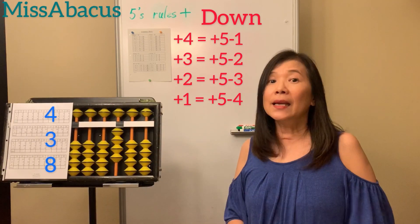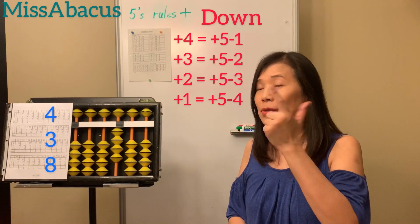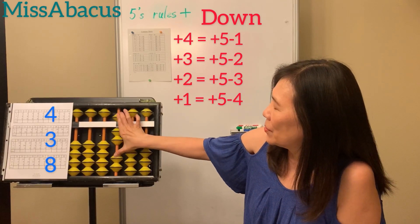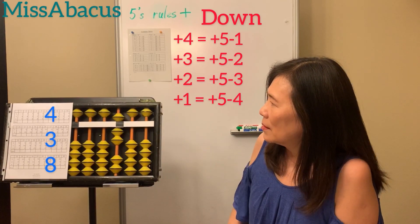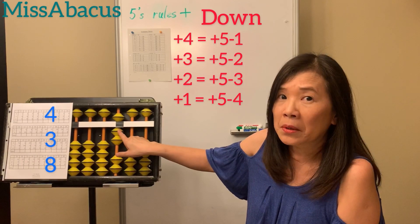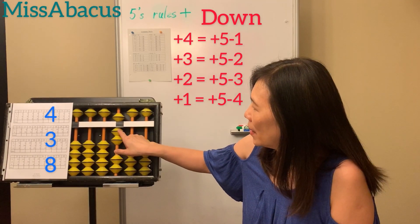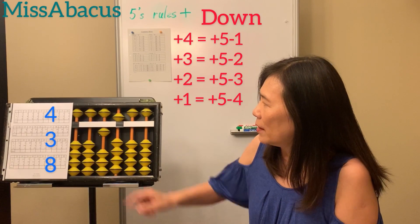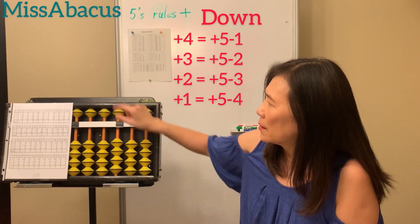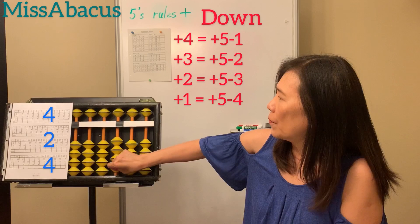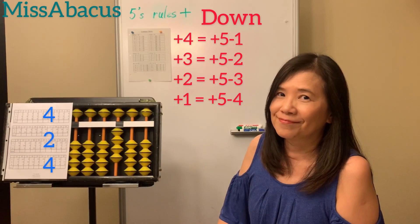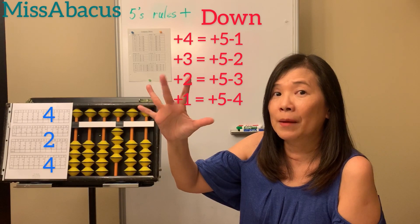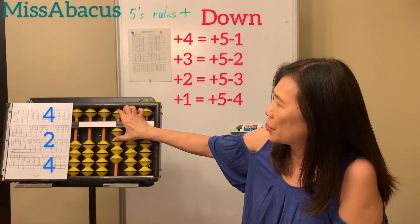Number three: four plus three. Four plus three — so down five, down two — that's three. Plus eight — big number, tens rule: minus two plus ten — so answer fifteen. Number four: four plus two. Four plus two — you need to do five minus three. Down five, down three — that's two.